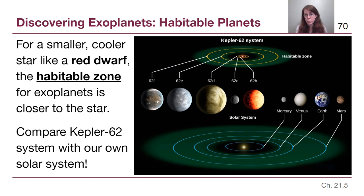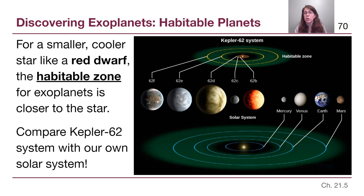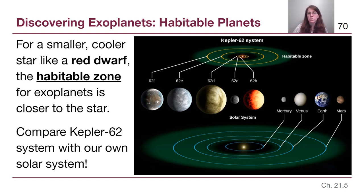For a smaller, cooler star like a red dwarf — shown here is the Kepler 62 system — the habitable zone would be closer to the star. This system has three planets extremely close to that small star. Planet 62D, for example, is larger than Earth but way too close to be cool enough for liquid water. But the Kepler 62 system also has two planets mostly in the habitable zone that are mostly not much bigger than Earth, making them one of the first exciting potential Earth analogs discovered.